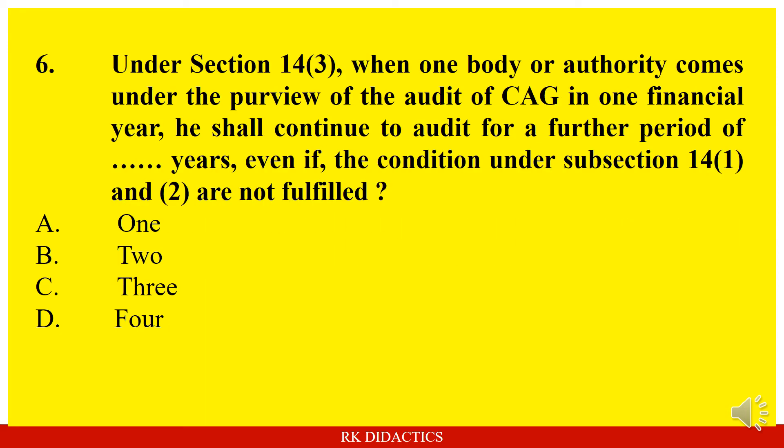Question: Under Section 14(3), when one body or authority comes under the purview of audit of CAG in one financial year, CAG shall continue to audit for a further period of how many years, even if the conditions under Sub-Section 14(1) and 14(2) are not fulfilled — 1 year, 2 years, 3 years, or 4 years? Answer: 2 years.